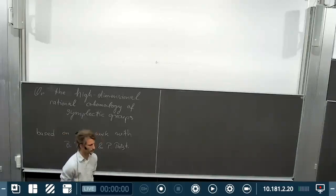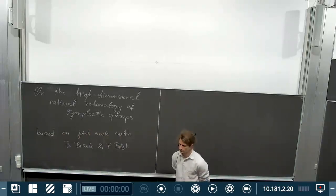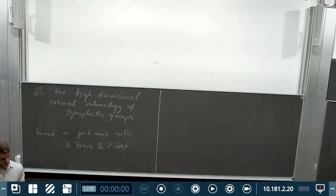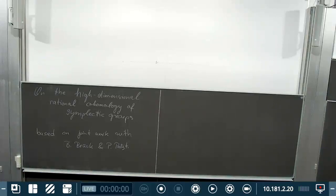It is my pleasure to introduce Robin Schroker, from the University of Copenhagen, who will speak on the high-dimensional rational cohomology of symplectic groups. Thank you for the invitation to speak and to the organizers for making this possible. I'm going to speak about the high-dimensional rational cohomology of symplectic groups, and the idea of this lecture will be to tell a story parallel to what we have heard in Jennifer Wilson's lectures, but for a subgroup of the special linear groups, which are these symplectic groups.